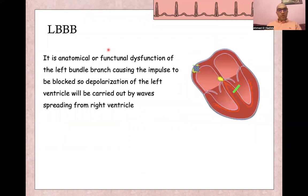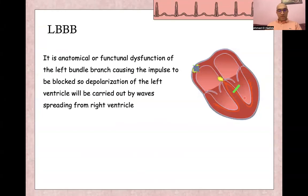Left bundle branch block is an anatomical or functional dysfunction of the left bundle branch. Block or dysfunction in the left bundle branch itself causes the impulse to be blocked, so depolarization of the left ventricle will be carried out by waves coming from the right ventricle through depolarization of the right bundle branch.